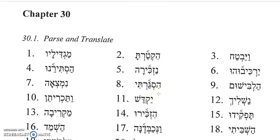Number eight, Hesgarti, from Sagar, to close or shut. The Hay in the front is the Hifial perfect with a Hirik under it, and the T ending is first common singular — I shut up something, I closed something. And then number nine, Halvishu-m — that will be a Patah under the Hay and a Hirik-Yod in the middle. Both are indications of Hifial. A Hifial imperative, second masculine plural: clothe them, from lavash, to put on clothes.